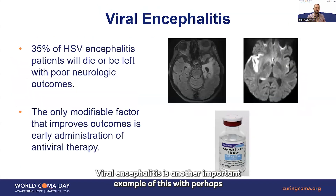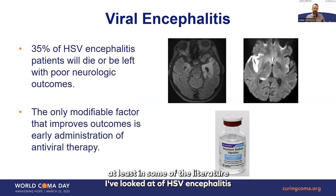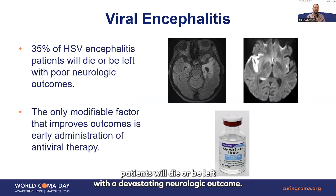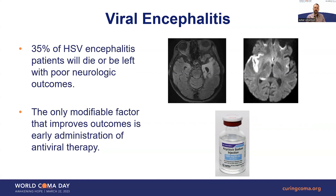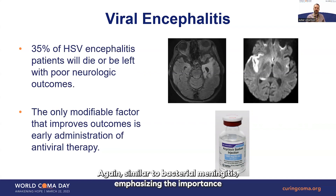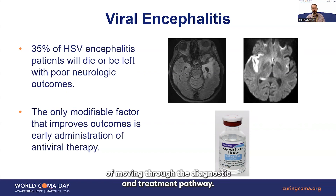Viral encephalitis is another important example, with HSV encephalitis being perhaps the most important. At least 35% of HSV encephalitis patients will die or be left with a devastating neurologic outcome. Of all the things studied in this illness, the only modifiable factor that consistently improves outcomes is early administration of antiviral therapy — again emphasizing the importance of moving through the diagnostic and treatment pathway quickly.